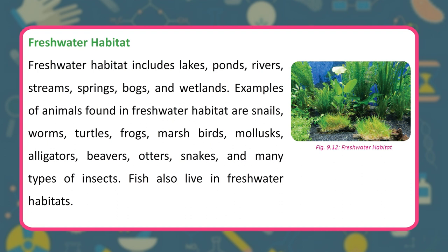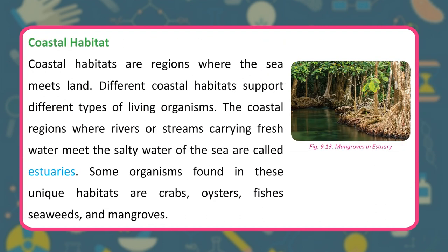Freshwater habitat includes lakes, ponds, rivers, streams, springs, bogs, and wetlands. Animals found here include snails, worms, turtles, frogs, marsh birds, mollusks, alligators, beavers, otters, snakes, and many insects. Coastal habitats are regions where the sea meets land. The coastal regions where rivers or streams carrying freshwater meet the salty sea are called estuaries. Organisms found in these habitats include crabs, oysters, fish, seaweeds, and mangroves.